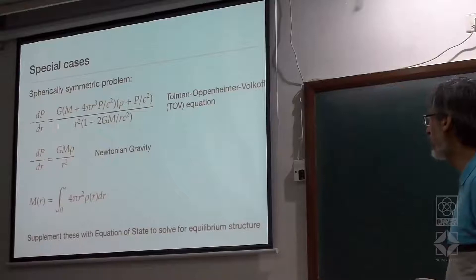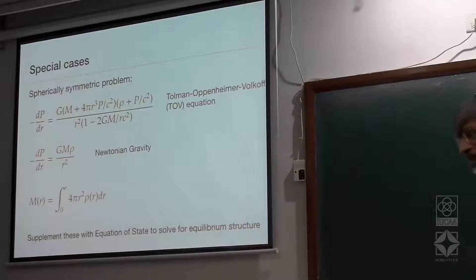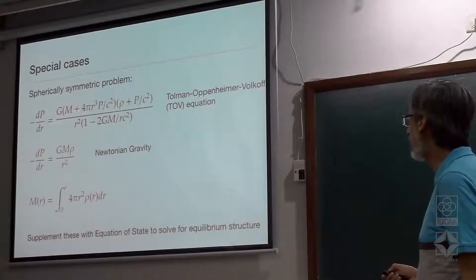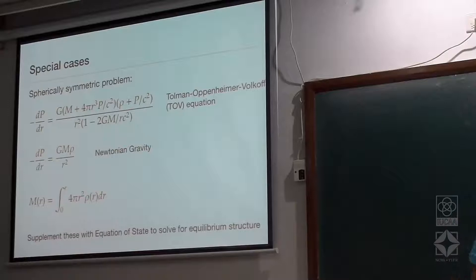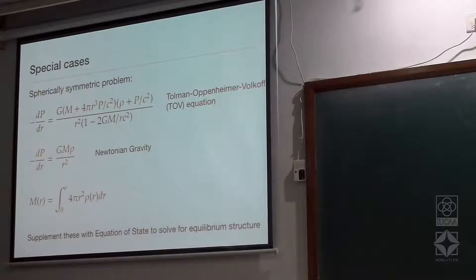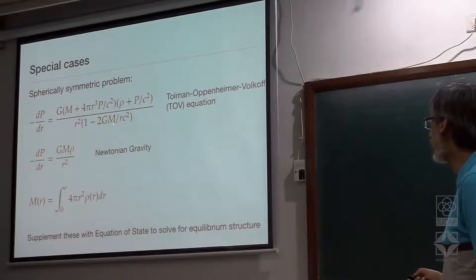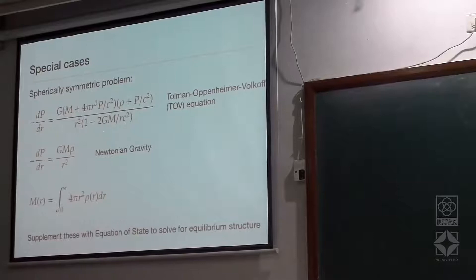That gives you dP/dR, the pressure gradient. Because it is spherically symmetric, the only gradients are in the radial direction. M is the total mass contained within radius r, P is the pressure at radius r, and rho is the equivalent mass density at radius r. If epsilon is the energy density, then the relativistic mass density rho equals epsilon over c squared. G is the gravitational constant, c is the speed of light. The quantity 2GM over r c squared is recognized as the Schwarzschild radius.